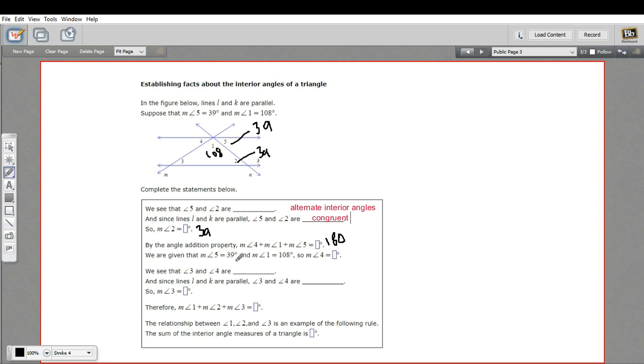Then it says we are given that five is 39 degrees and the measure of angle one is 108. So the measure of angle four is what? Well, we could subtract 108 and 39 from 180. I think you get 33 there.